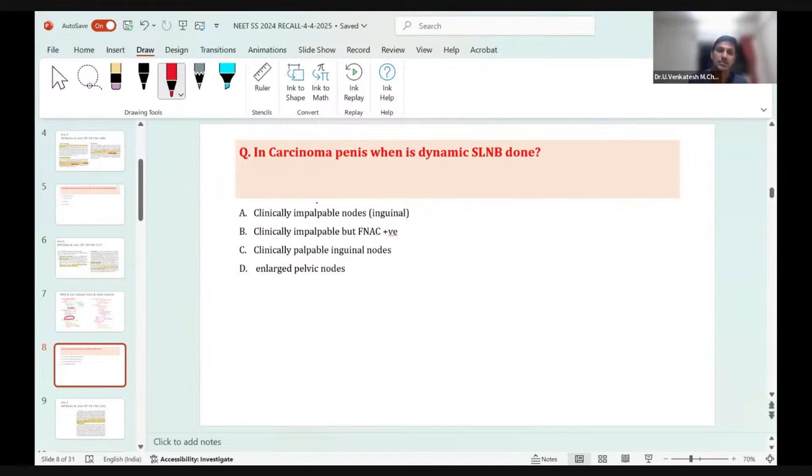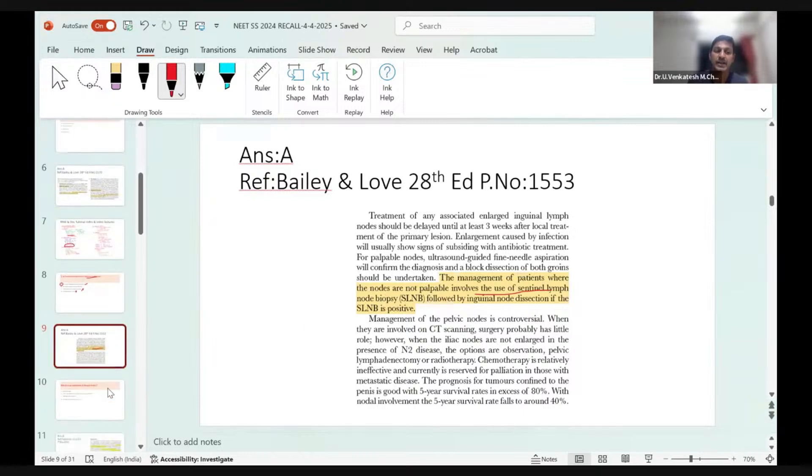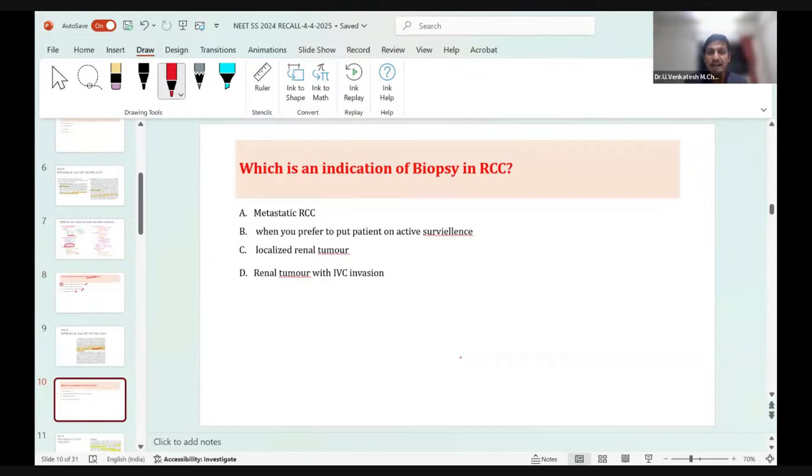Next is a question on carcinoma penis. When is dynamic sentinel lymph node biopsy done? Options were clinically impalpable nodes, clinically impalpable but FNAC positive nodes, clinically palpable inguinal nodes, and enlarged pelvic nodes. Any palpable nodes you can directly go for biopsy, FNAC or excision biopsy. Enlarged pelvic nodes on CT is always metastatic disease with no role for sentinel lymph node biopsy. Dynamic sentinel lymph node biopsy is done only when inguinal nodes are not palpable.